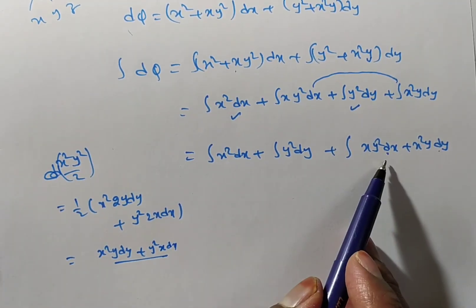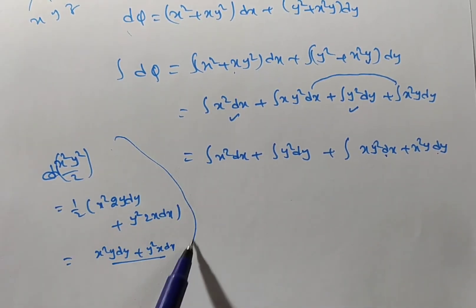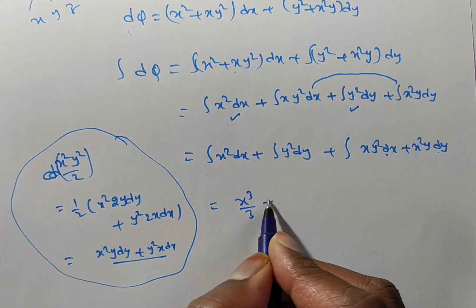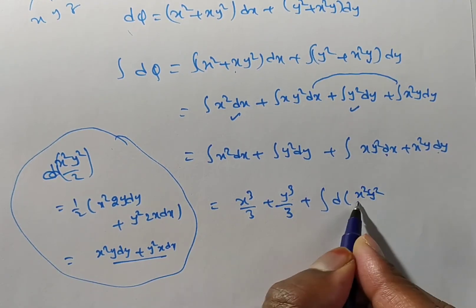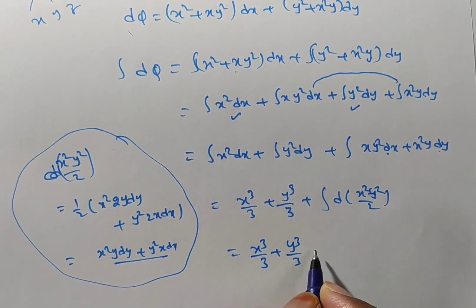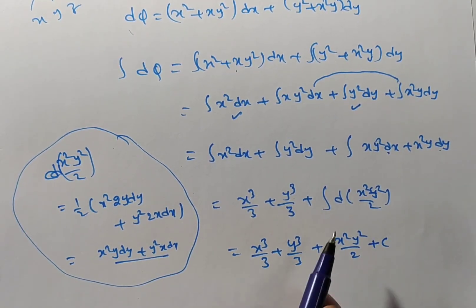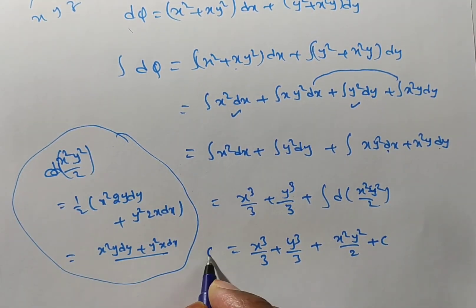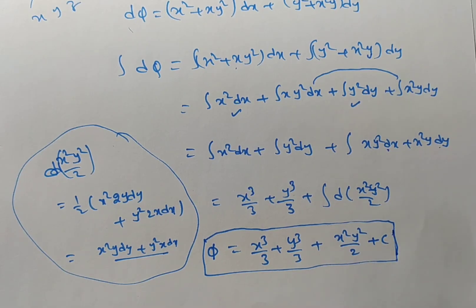Now integrating all terms: ∫x²dx = x³/3, ∫y²dy = y³/3, and the inspection term gives x²y²/2 (derivative and integral cancel). Therefore, the left side ∫dφ = φ, and the scalar potential function is φ = x³/3 + y³/3 + x²y²/2 + C.